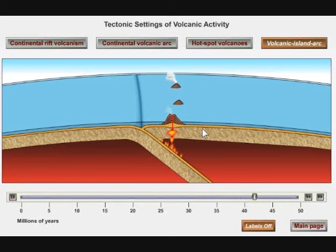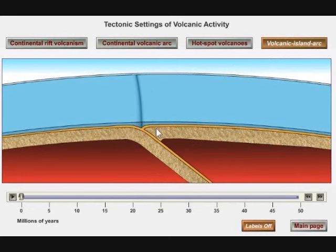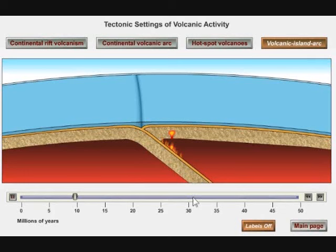You see how it's very similar to the continental situation. The only difference is that the volcanoes are popping up out of the ocean parallel to the trench, instead of on land parallel to the trench. An example of this would be the Aleutian Islands, the Philippines, or the Marianas Islands in the Pacific. These are all what we call volcanic island arcs.